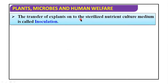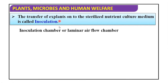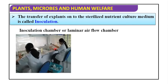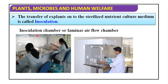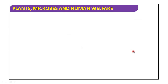The transfer of the explant onto the sterilized nutrient culture medium is called inoculation. After sterilization, we transfer the explant onto that medium — that is inoculation. The inoculation chamber or laminar air flow chamber is used for this. The practical is done here under sterile, safe, aseptic condition, and it is a very interesting practical.